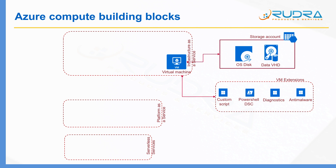Extensions are not the only way — you can use Azure Automation also. Using Azure Automation, you can do compliance checks to verify whether the Virtual Machine is adhering to compliance standards. If any Virtual Machine is found to be non-compliant, you can run certain scripts on that Virtual Machine to make it compliant.